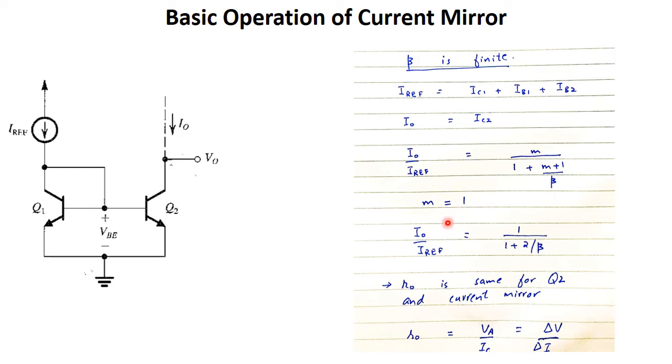If M is equal to 1, which means both transistors are of the same dimension, then this ratio is given by 1 over (1 + 2/β).